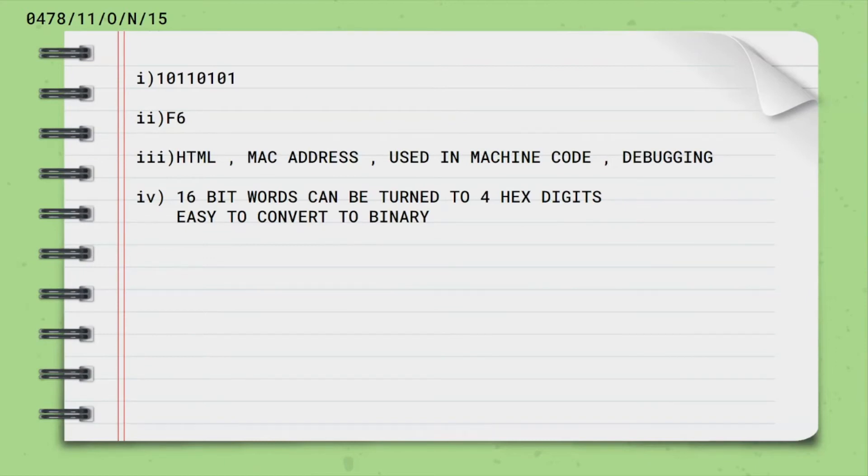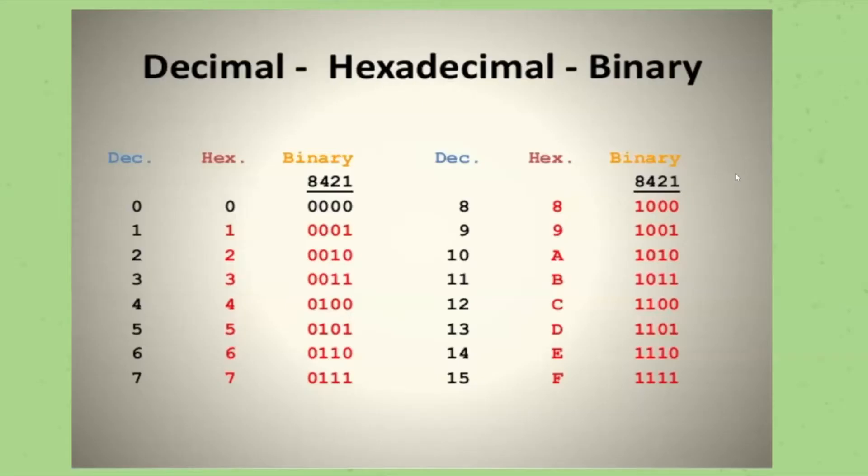Now let's look at the answers. First, let's see the third and fourth subdivision. You can write any two of the following for examples of where hexadecimal are used: HTML, mac address, debugging or used in machine code. Then the benefits of hexadecimal are 16 bit words can be turned into four hex digits. And also it is easy to convert to binary. Now let's do the conversions. But before that, let me show you an image.